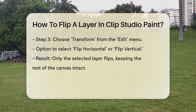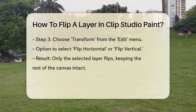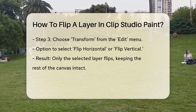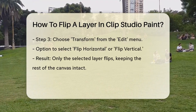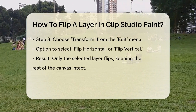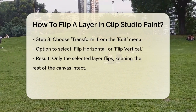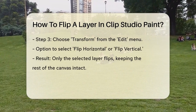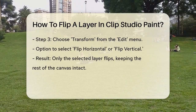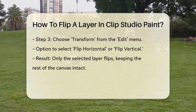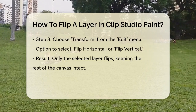navigate to the top menu bar and click on the Edit menu. From the Edit menu, select Transform, and then choose either Flip Horizontal or Flip Vertical, depending on the direction you want to flip your layer. This will flip only the selected layer, leaving the rest of your canvas unchanged.